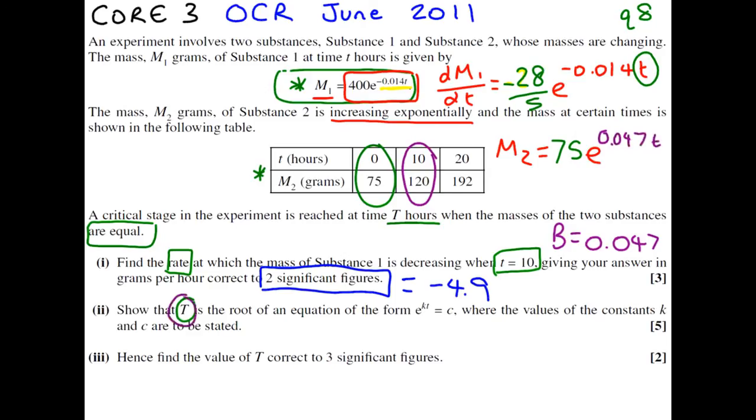At this special time t, put these two equations together. 400 e to the minus 0.014 big T equals 75 e to the 0.047 big T, because they're the same at this instance.